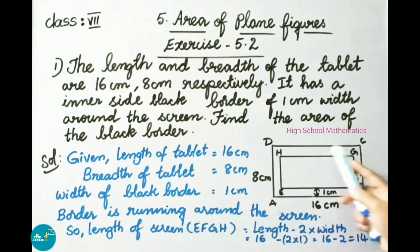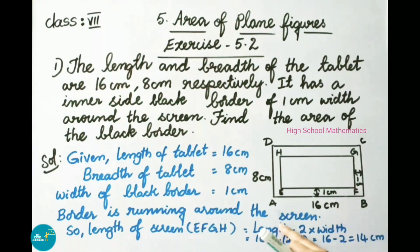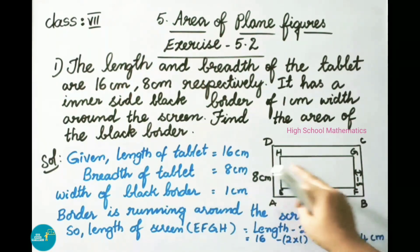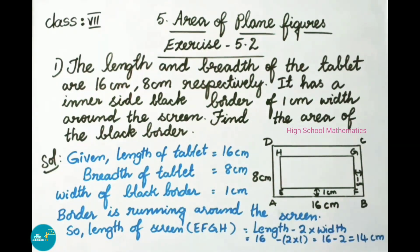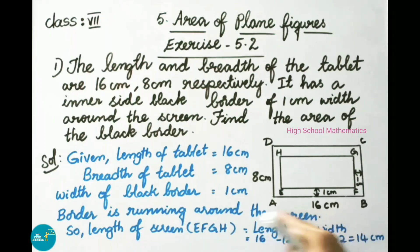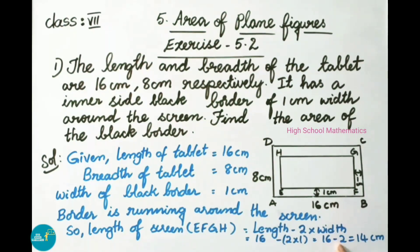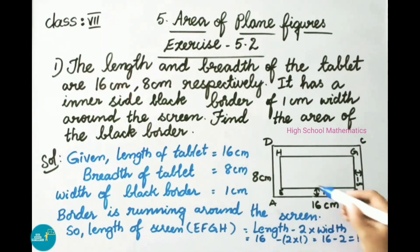We are going to find the length of screen EFGH. We take the length of the tablet, 16 centimeter, and subtract 2 times the width on both sides. So length equals 16 centimeter minus 2 into 1 centimeter, which is 16 minus 2, giving us 14 centimeter. Therefore the length of the screen is 14 centimeter.